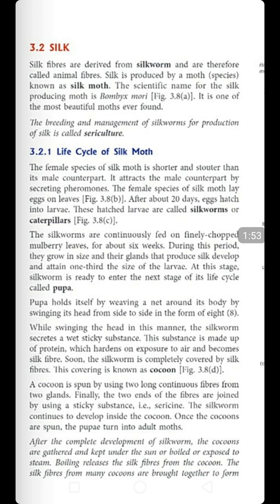Now let us discuss the life cycle of the silk moth - how the moth is born, how they produce silk, and what happens at the end. Starting from the mating of female and male silk worms: the female species of the silk moth is shorter than the male counterpart. It attracts the male by excreting certain hormones - chemicals. The female excretes hormones to attract the male, mating takes place, and then the female silk moth lays eggs on leaves.